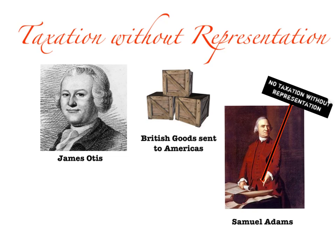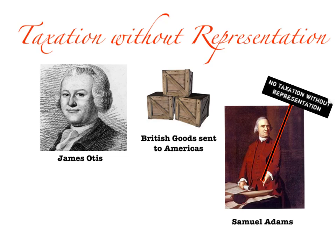In addition to the taxes many Americans felt were unfair, they actually thought that the British Parliament didn't have any right to tax the colonies at all. This became popular beginning with James Otis, who said that the British could not take any man's property without his consent in person or by representation. The colonists believed that if they didn't have representation in Parliament, the English had no right to take anything from them, be it tax money or property.